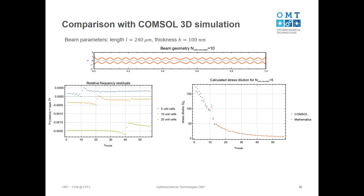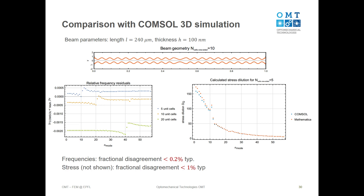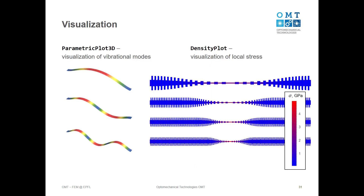It's crucial to understand how reliable this solution is. We directly compared solutions from the Mathematica program to full 3D COMSOL simulations for a case COMSOL handles relatively well — a structure 240 microns long and 100 nanometers thick. The fractional disagreement between COMSOL and Mathematica in eigenfrequencies is typically below 0.2 percent, and the disagreement in stress distribution is below 1 percent. The Q factor comparison is somewhat worse, but we have good arguments to believe our model works well there.